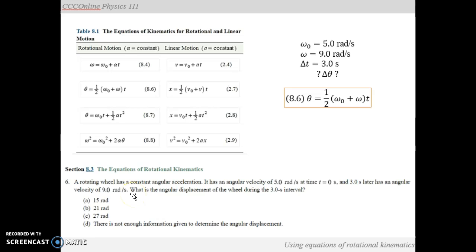This is how I would approach rotational motion problems as well as linear motion. So we'll just read this. A rotating wheel has a constant angular acceleration. It has an angular velocity of 5 radians per second at time equals 0 seconds, and 3 seconds later it has an angular velocity of 9 radians per second. What is the angular displacement of the wheel during the 3 second interval?